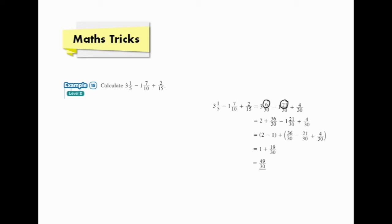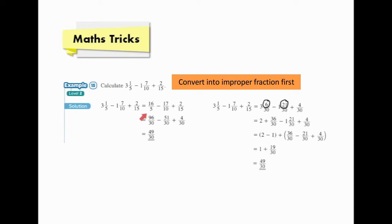That's why we suggest using the method on the left to work out the question. Here we convert all mixed fractions into improper fractions at the beginning. Then, we expand the fractions to make their denominators the same and perform addition and subtraction of fractions. See, it looks easier. So when doing questions involving fractions, it is good to convert the mixed numbers to improper fractions first every time.